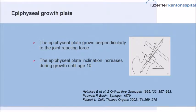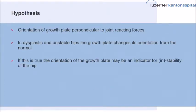Maybe of help could be the orientation of the growth plate. We know the epiphyseal growth plate grows perpendicular to the joint reaction forces, as published by Pauwels and Hamkins among others. The orientation changes until about age 10 during growth, after the physis closes, and then it won't change direction anymore. We did a study with the hypothesis that the orientation of the growth plate is perpendicular to joint-reacting forces, and that in dysplastic and unstable hips the growth plate may change its orientation from normal — meaning this could be a dynamic indicator for the stability or instability of the hip.